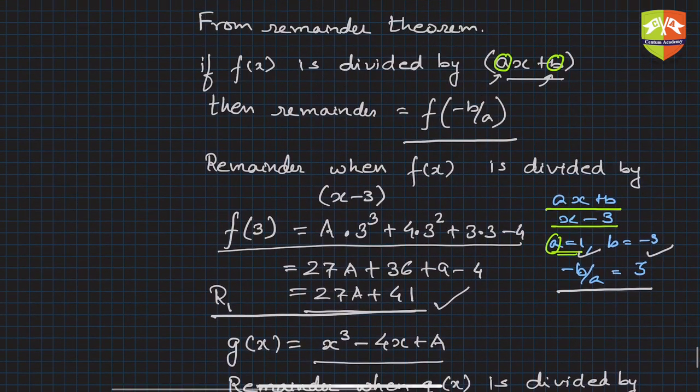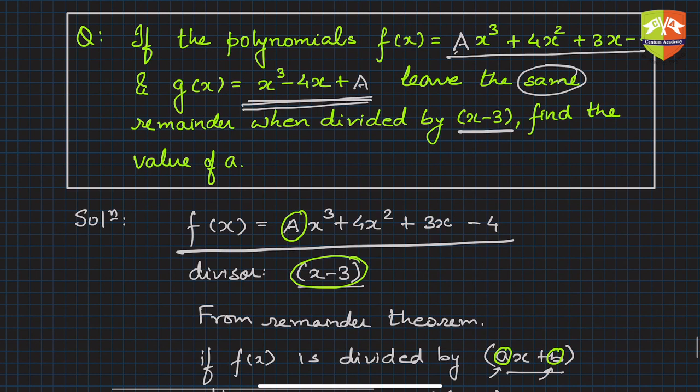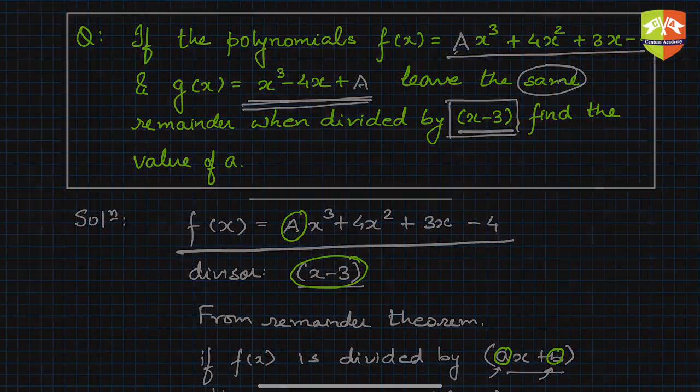This is the solution. If capital A is -1, then both these polynomials leave the same remainder when divided by this particular divisor. I hope you understood the application of this theorem in this question.